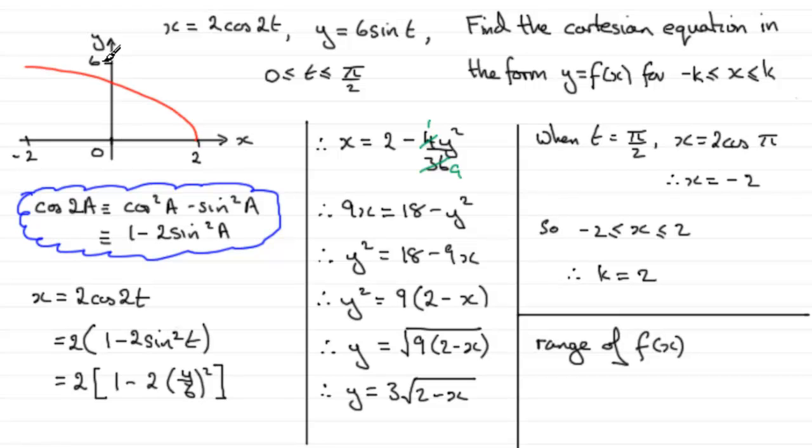We discovered that it was 6 up here when we found out that when t was π/2, do you remember, x was 2 times the cosine of what would be π, and 2 cos π, 2 times -1, gave us the -2. And when we put π/2 into here we got the corresponding y value, which was 6 sine π/2, which was 6 times 1, which is 6. So that gave us this value up here.